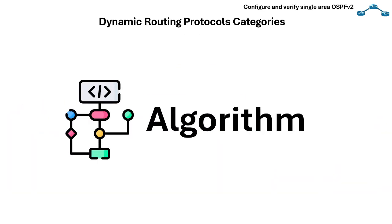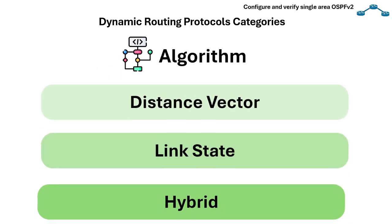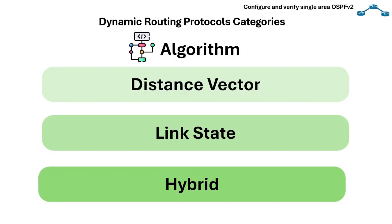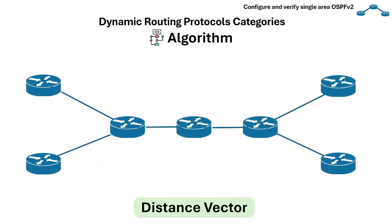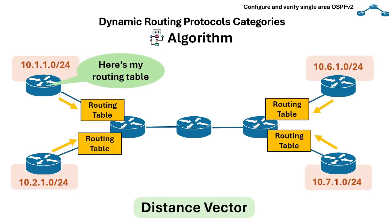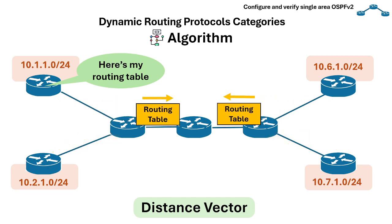Then there's the category based on algorithm. Routing protocols can be separated into three classes: distance vector, link state, and hybrid. A distance vector protocol is a dynamic routing algorithm where each network router sends its entire routing table to its neighboring routers. The neighboring routers then forward their routing knowledge to their adjacent routers and so on until each one learns everything.